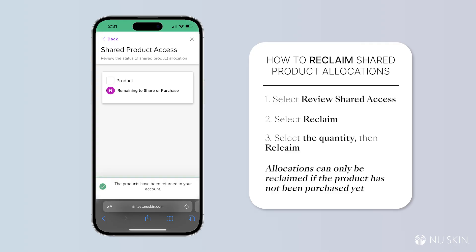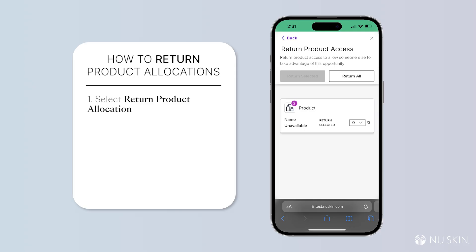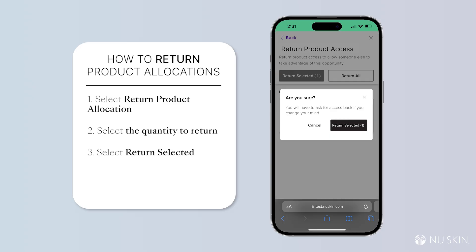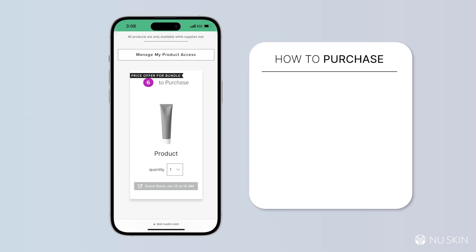You'll only be able to reclaim allocations if they haven't purchased yet. Now if you're on the receiving end and you'd like to return it back to the person that shared an allocation with you, you would click on 'Return Product Allocation.' Once you're there, you can select the quantity amount to send back to the person that shared to you, click 'Return Selected,' and you can see the remaining amount of products left that haven't been returned.